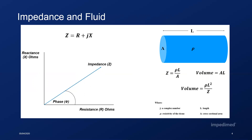If the cross-sectional area increases, the opposition to flow decreases as there is more space for the current to flow through, and therefore the impedance decreases. This is summarized in the equation for impedance. For a simple conductor with a uniform cross-sectional area such as a cylinder, the volume of the conductor is equal to the cross-sectional area multiplied by the length. Combining these equations, we can estimate the volume of the cylinder according to the resistivity, length, and impedance of the conductor.